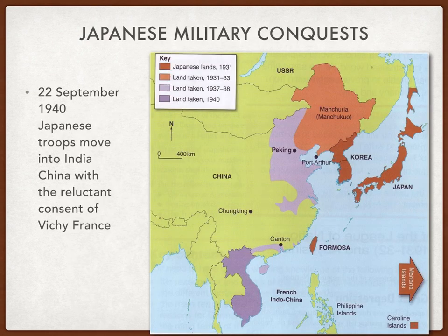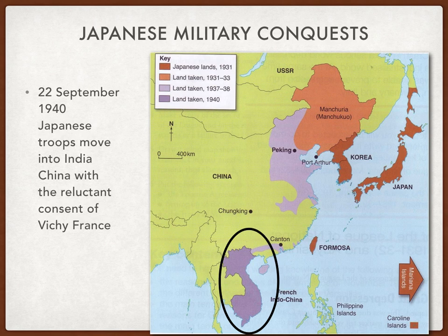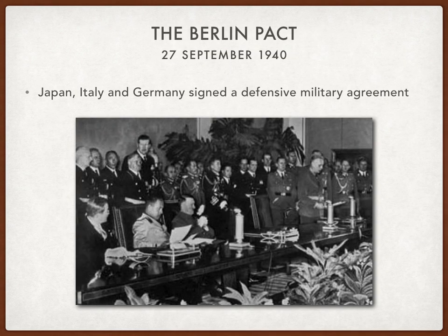Japan continued its military conquests after it took parts of China. They moved into Indochina, which had belonged to France. Vichy France very reluctantly agreed to this as Japan was in a military alliance with Germany at the time. Japan, Italy, and Germany signed a defensive military agreement known as the Berlin Pact on the 27th of September 1940, stating that if one of them was to go to war the others would help each other out.